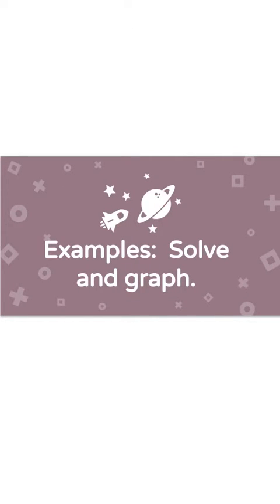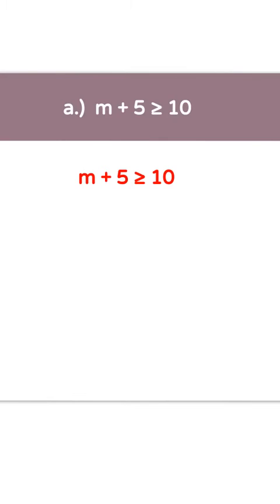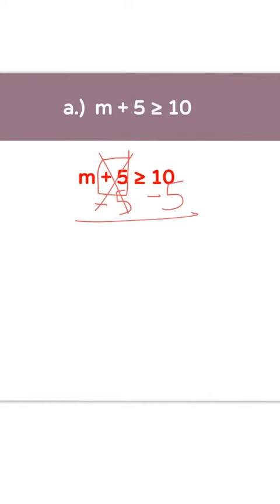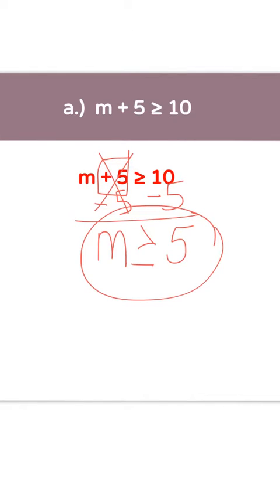Examples — solve and graph. Letter A: m plus 5 is greater than or equal to 10. You need to get the variable m by itself, so you want to get rid of the plus 5. The inverse operation is to subtract 5 from both sides. That cancels out the plus 5. You have a positive 10 and a negative 5 — different signs, so you subtract: 10 minus 5 is 5. Since 10 is the bigger number, you keep it positive. Your answer is m is greater than or equal to 5.